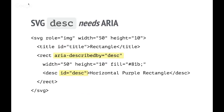Here we have another simple image — it's a rectangle. You need to put aria-describedby with a pointer to the thing that is actually being described, otherwise it won't be available. When you do put this in, it's presented by most browsers to most screen readers — it goes into the accessibility API and can be used.